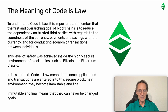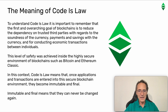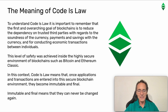The meaning of Code is Law. To understand Code is Law, it is important to remember that the first and overarching goal of blockchains is to reduce the dependency on trusted third parties with regards to the soundness of the currency, payments and savings with the currency, and for conducting economic transactions between individuals. This level of safety was achieved inside the highly secure environments of blockchains such as Bitcoin and Ethereum Classic. In this context, Code is Law means that once applications and transactions are entered into this secure blockchain environment, they become immutable and final. Immutable and final means that they can never be changed again.